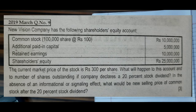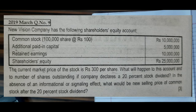In 2019 March, question number 9: New Vision Company has the following shareholder equity account. Common stock: 1 lakh shares at Rs. 100, amount 10 million. Additional paid-in capital: 5 million. Retained earnings: 10 million. Total shareholder equity: 25 million. The current market price of the stock is 300 per share.